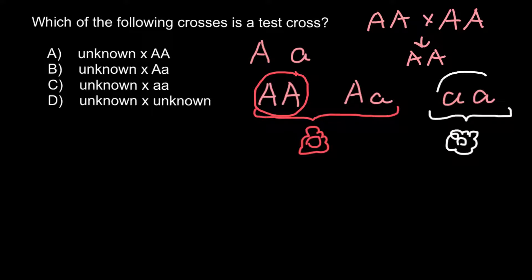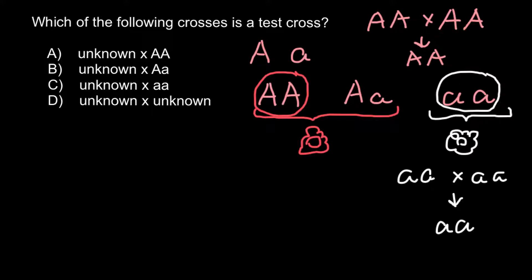The homozygous recessive genotype is also true breeding. If we cross small a, small a with another small a, small a genotype, 100% of the progeny would also be homozygous recessive. So the result of the first cross would be 100% plants with red flowers, and the result of the second cross would be 100% plants with white flowers.